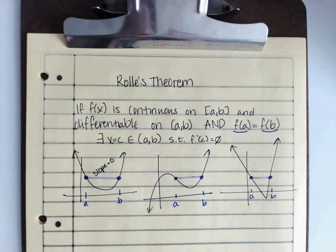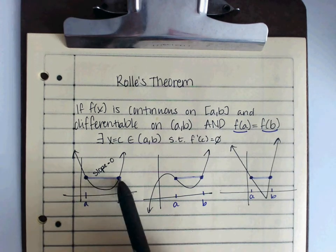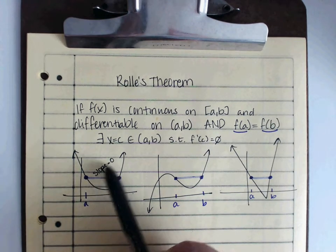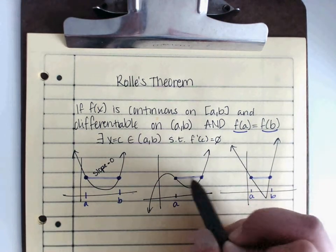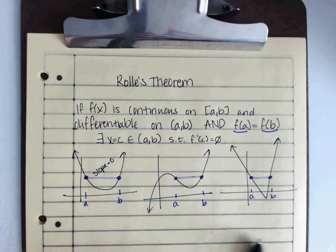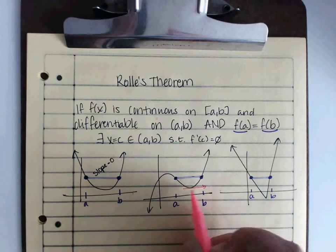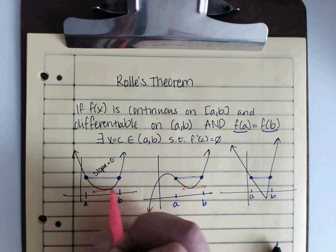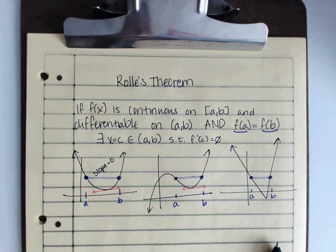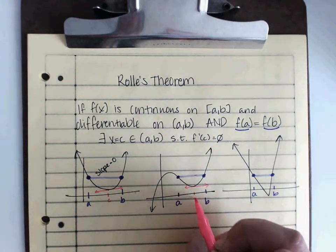So, I need f prime of c for Rolle's Theorem. Instead of equaling the average rate of change, it's just going to equal zero. Because if these guys match, my slope is going to be flat across anyway. Same thing for this one. If my y values here are the same, then I know that I'm going to have to have a place where my tangent line is flat, and this slope is zero. Same thing on this graph. It's flat at the bottom of that u, so then that would be my potential c. Over here, that would be my c.